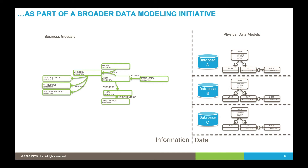The third approach uses a business glossary, which is core to most data governance initiatives and is an important part of ER Studio Team Server. In this approach, we'll reverse engineer each of the physical models and then map each one to business terms. We can then do analysis from the business glossary, going through term by term to see where that information exists in the physical landscape.